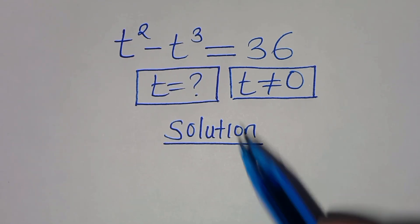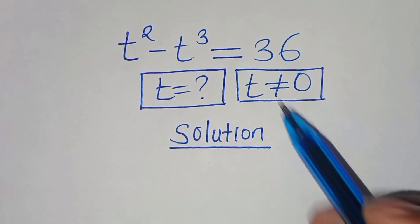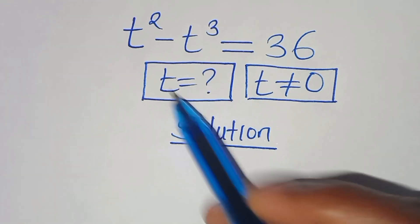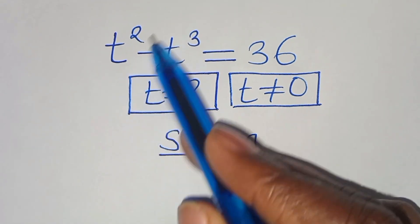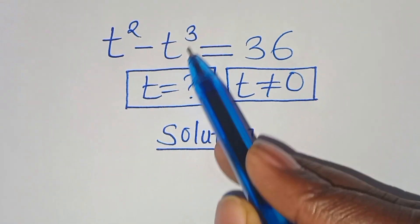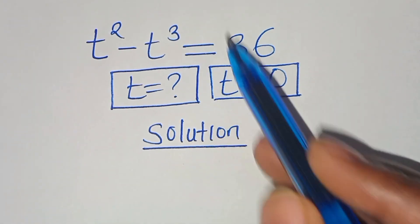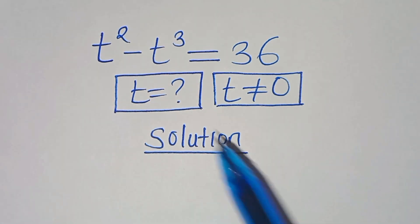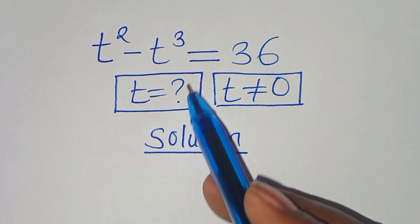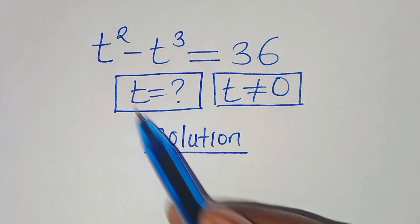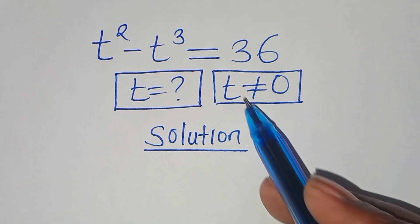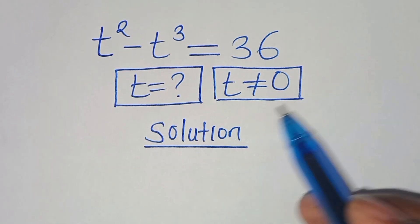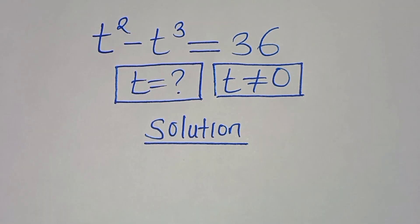Hello everyone, welcome to solve this nice algebra problem, which is t squared minus t to the power of 3, this is equal to 36. So what are the values of t, given that t is not equal to 0?